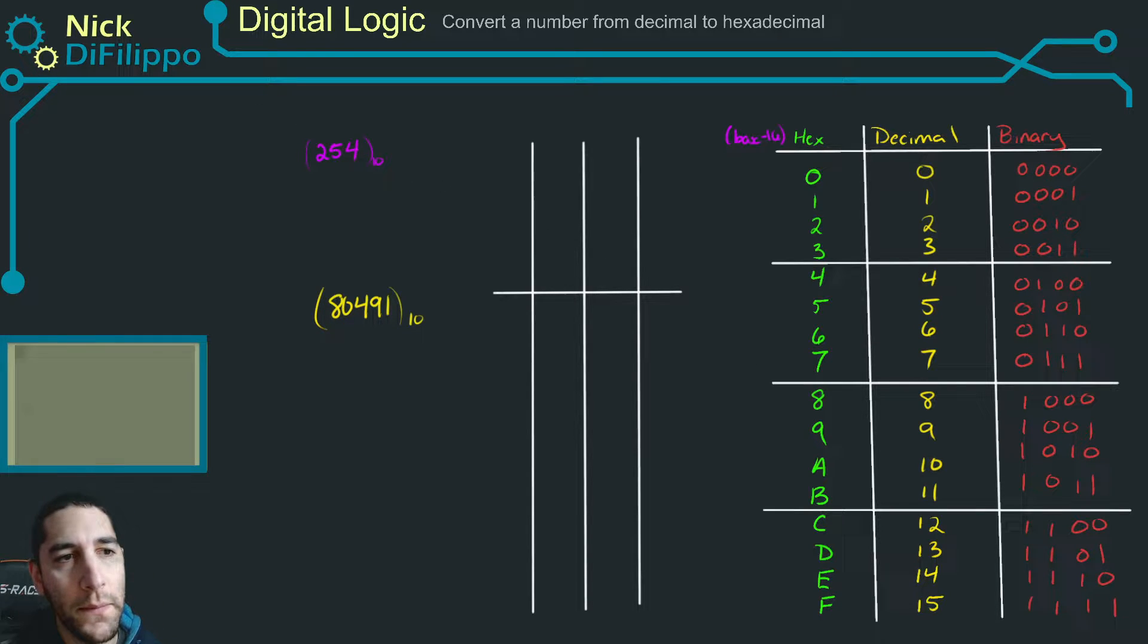Let's look at how to convert decimal numbers to hexadecimal numbers. I'm going to start with the number 254. So the first thing I want to do is take the number I'm trying to convert,